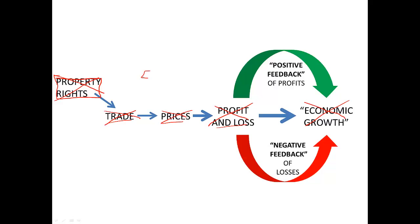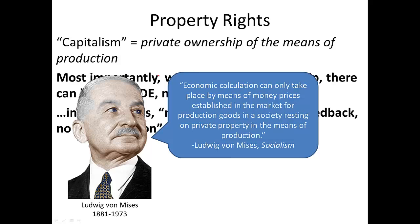In a socialist economy where you outlaw private ownership, you therefore outlaw trade, outlaw prices, outlaw profit and loss accounting, eliminate feedback, and therefore eliminate growth. Entrepreneurs can't function for two reasons: the prices aren't there, so entrepreneurs are blind to begin with. Furthermore, entrepreneurs and business owners can't own businesses, land, buildings, vehicles, or inventories. So entrepreneurship is outlawed as well in this kind of economy. With no entrepreneurs and no prices, you're hopeless. This is what von Mises was talking about when he wrote his famous critique of socialism in 1920.